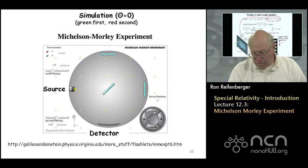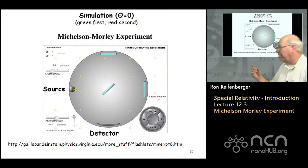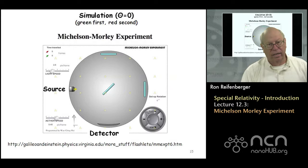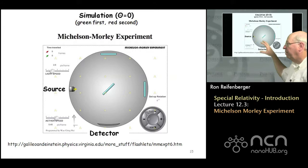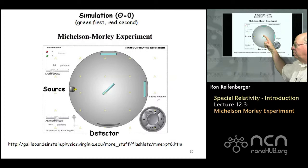In the next few slides, I've made available a computer simulation you can run yourself on the web. This tries to illustrate the basic idea I worked through the arithmetic on. This is the Michelson-Morley experiment: here's a source of light that strikes a partially silvered mirror, gets split into two beams, those two beams travel, recombine, and then strike a detector.